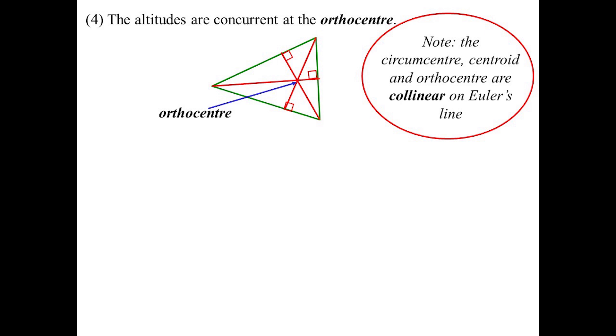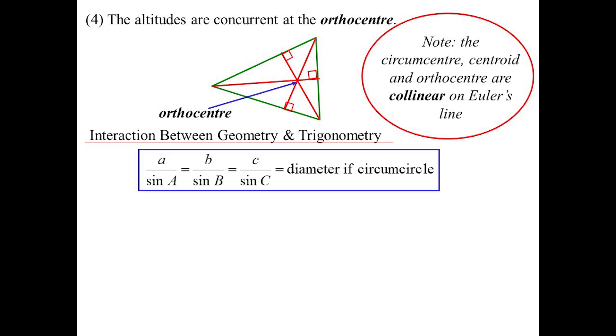Interaction between geometry and trig - the most common one we've seen so far is the sine rule. You may recall that it's a over sine A equals b over sine B and so on, but it also equals the diameter of the circumcircle. In fact, last year's paper, the circle geometry question was basically proving this.